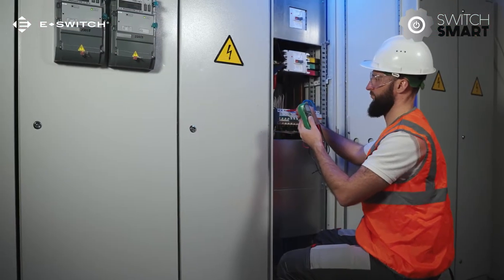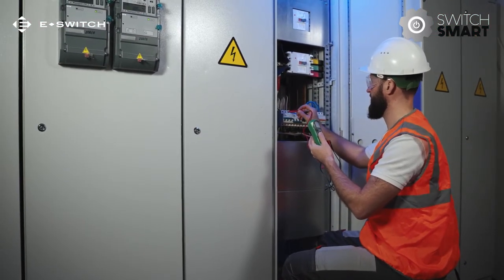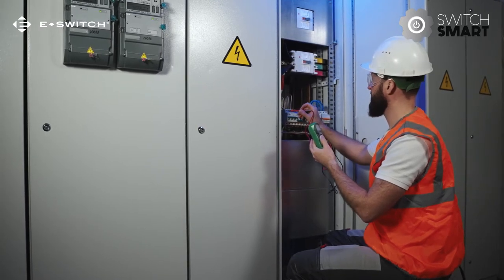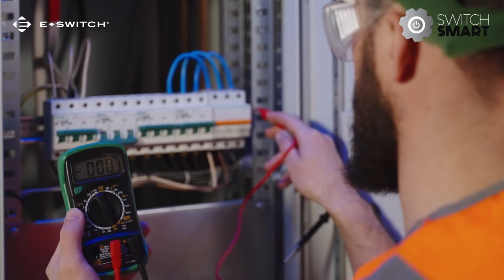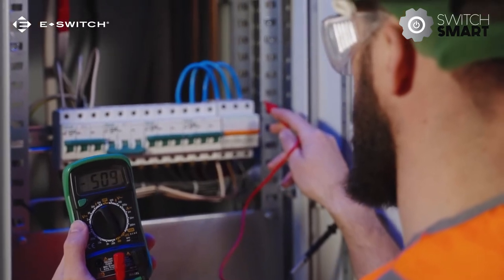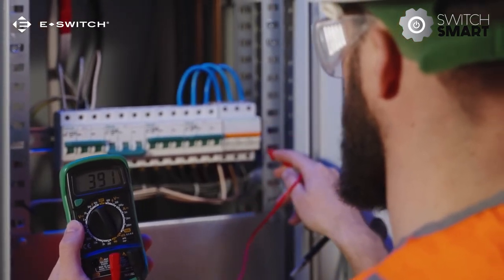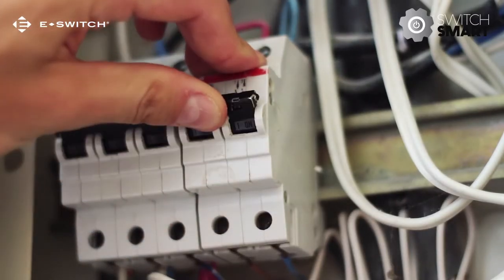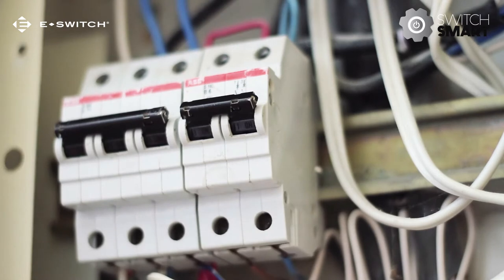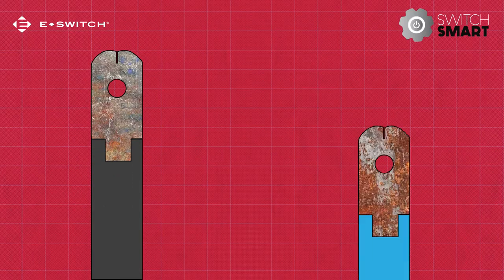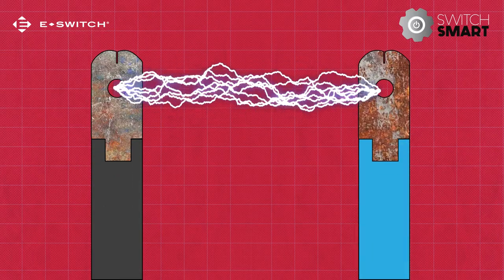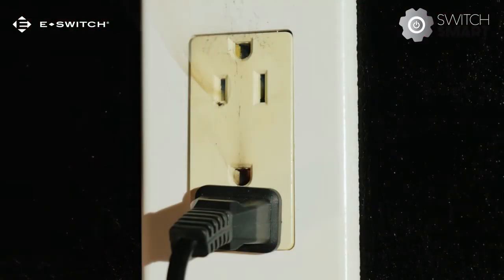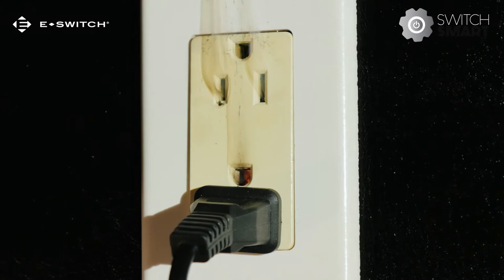It's important to know contact resistance in order to maintain contacts and ensure proper use, especially when it comes to high current load. For example, the contacts in your home's circuit breaker should be checked periodically to ensure it's functioning properly. Poorly maintained or damaged contacts could lead to arcing — this is when a circuit becomes overloaded and the electrical current flows through the air from one conductive point to another. This could result in fire or an electric shock.